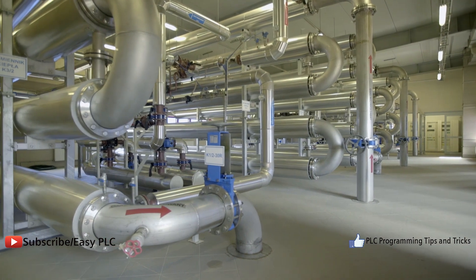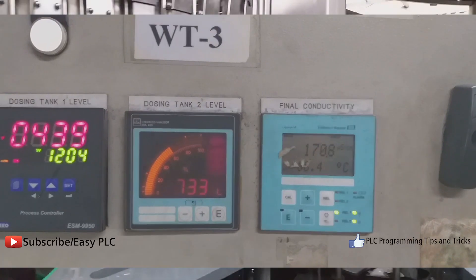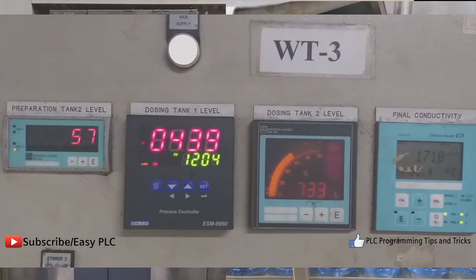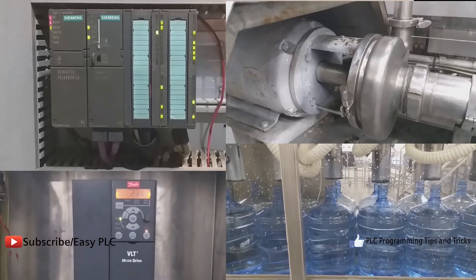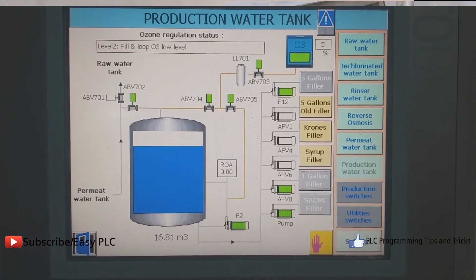PID controllers are found in a wide range of applications for industrial process control. Approximately 95% of the closed-loop operations of industrial automation sector use PID controllers.